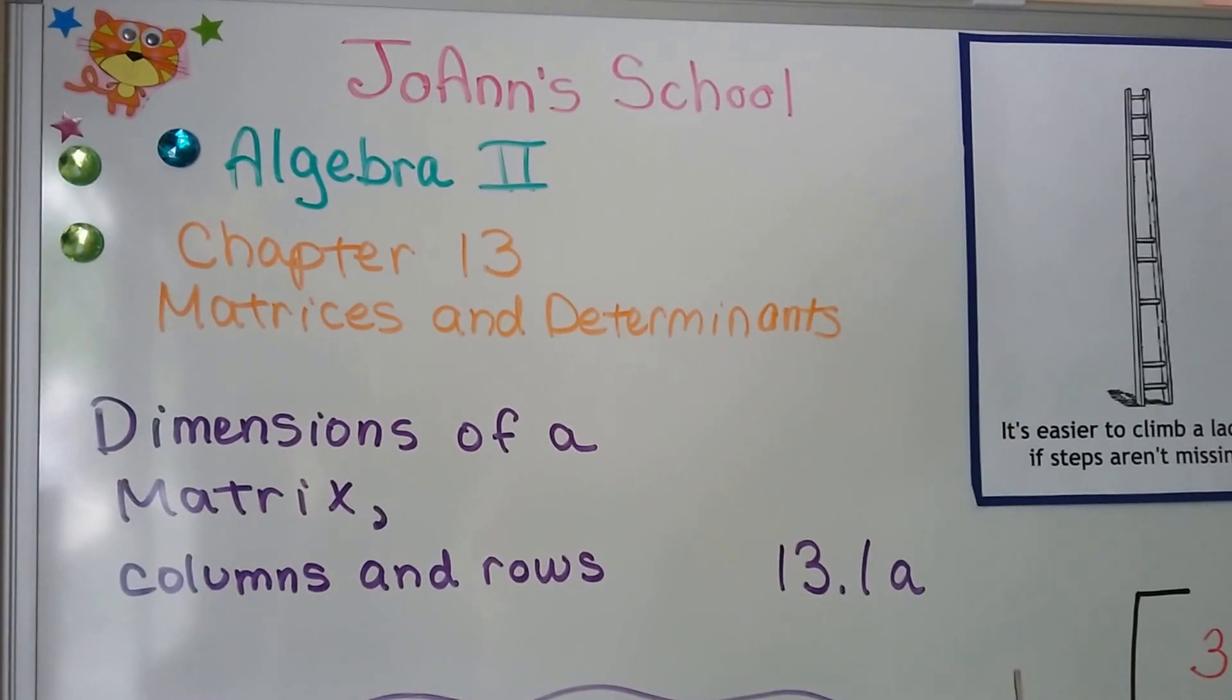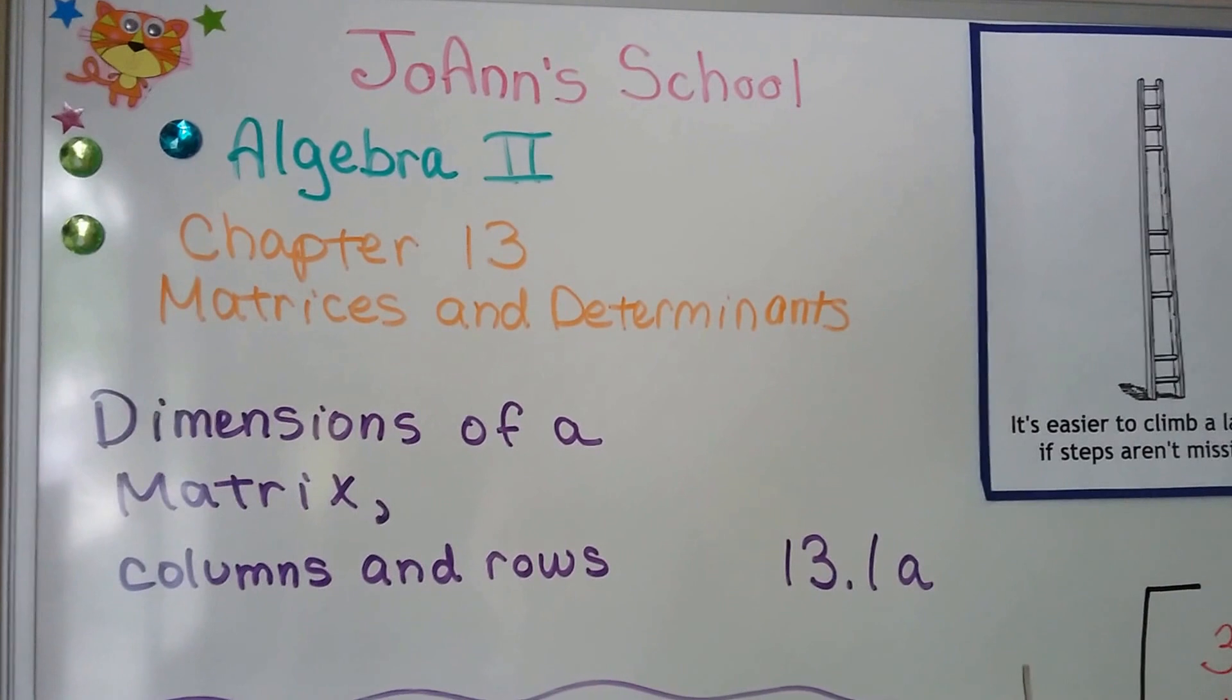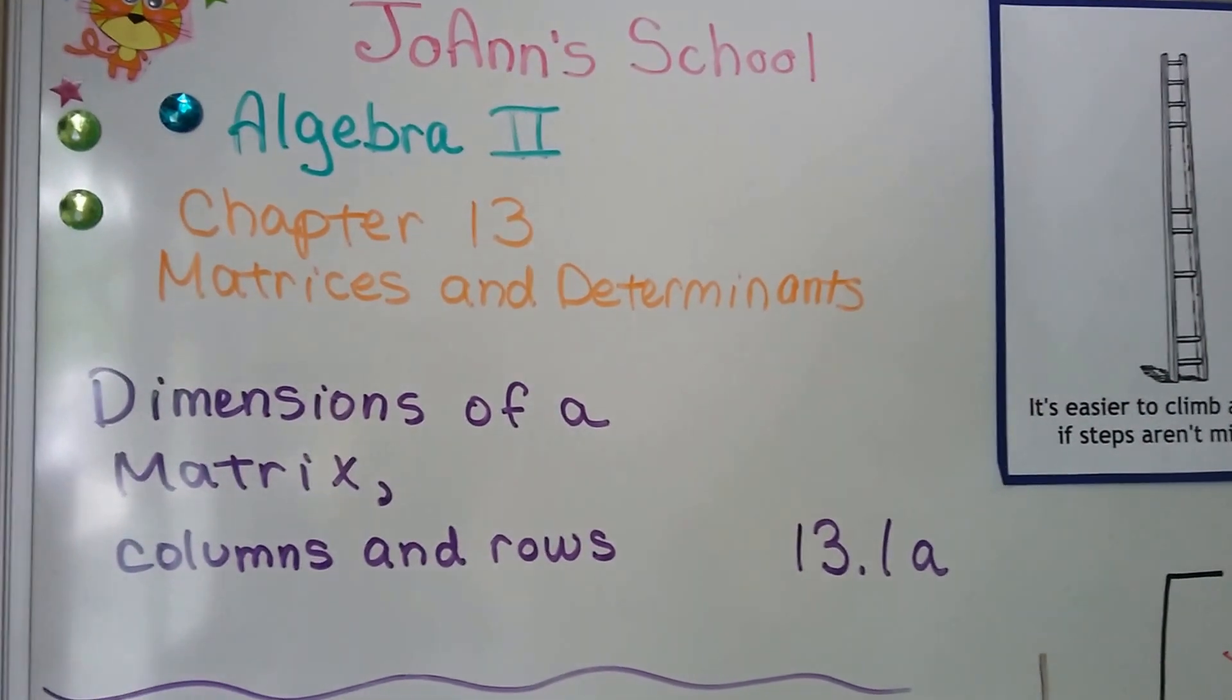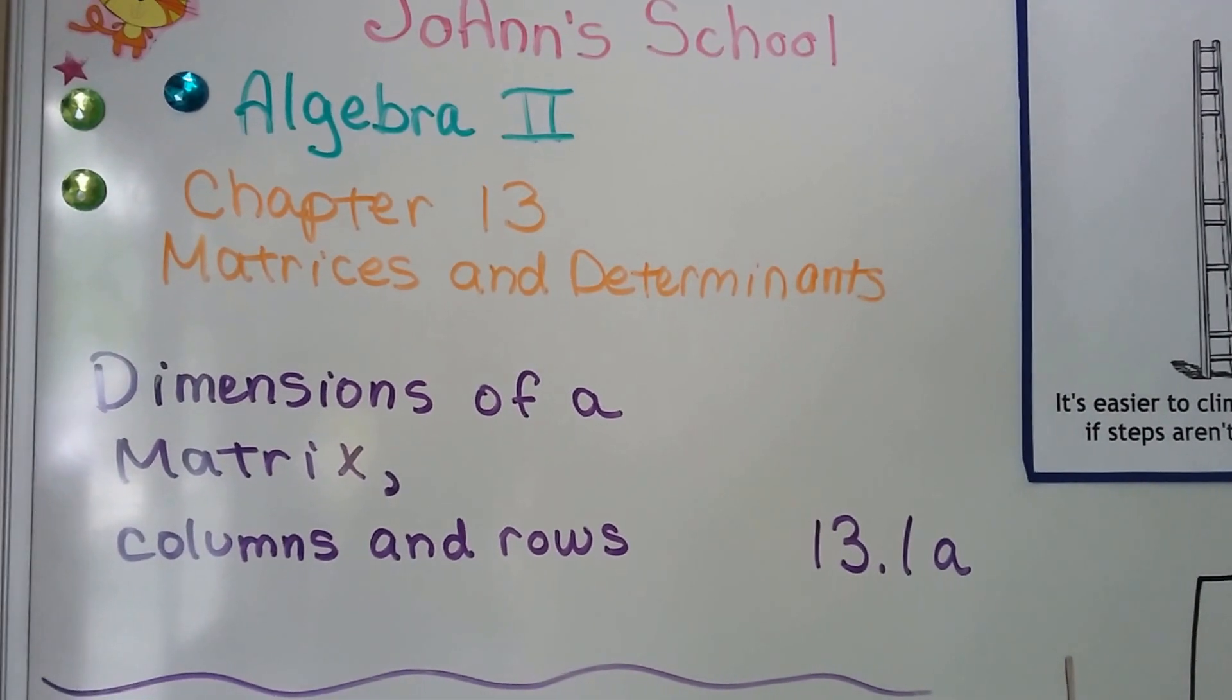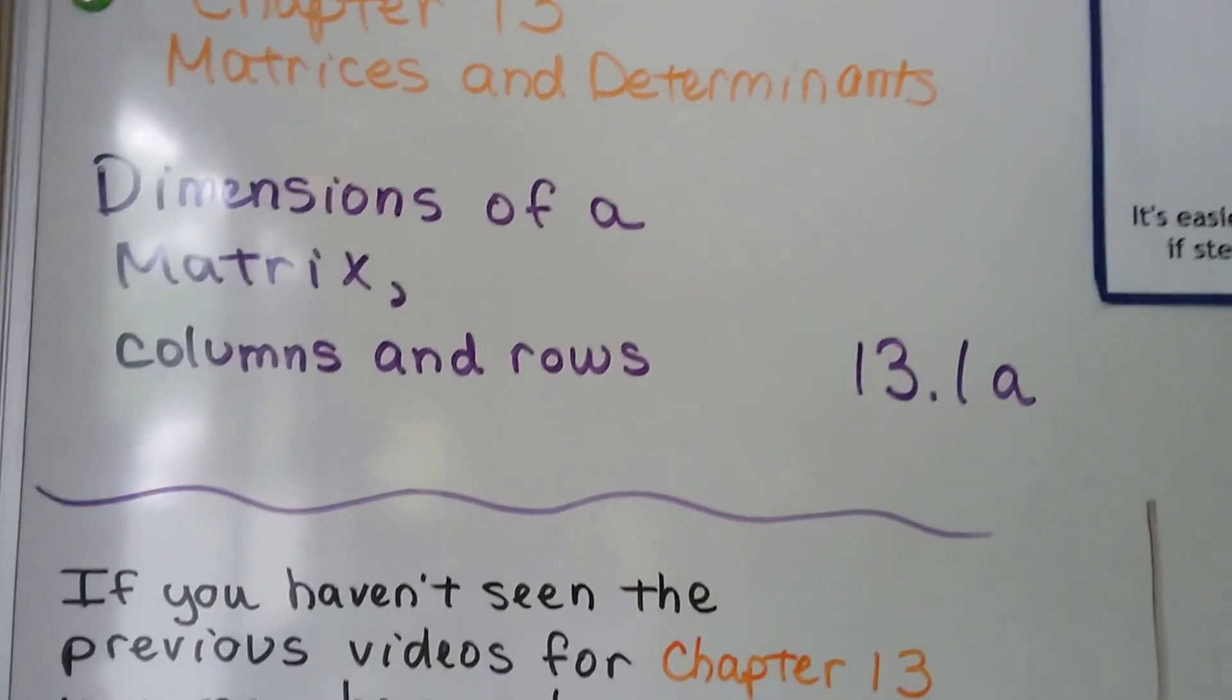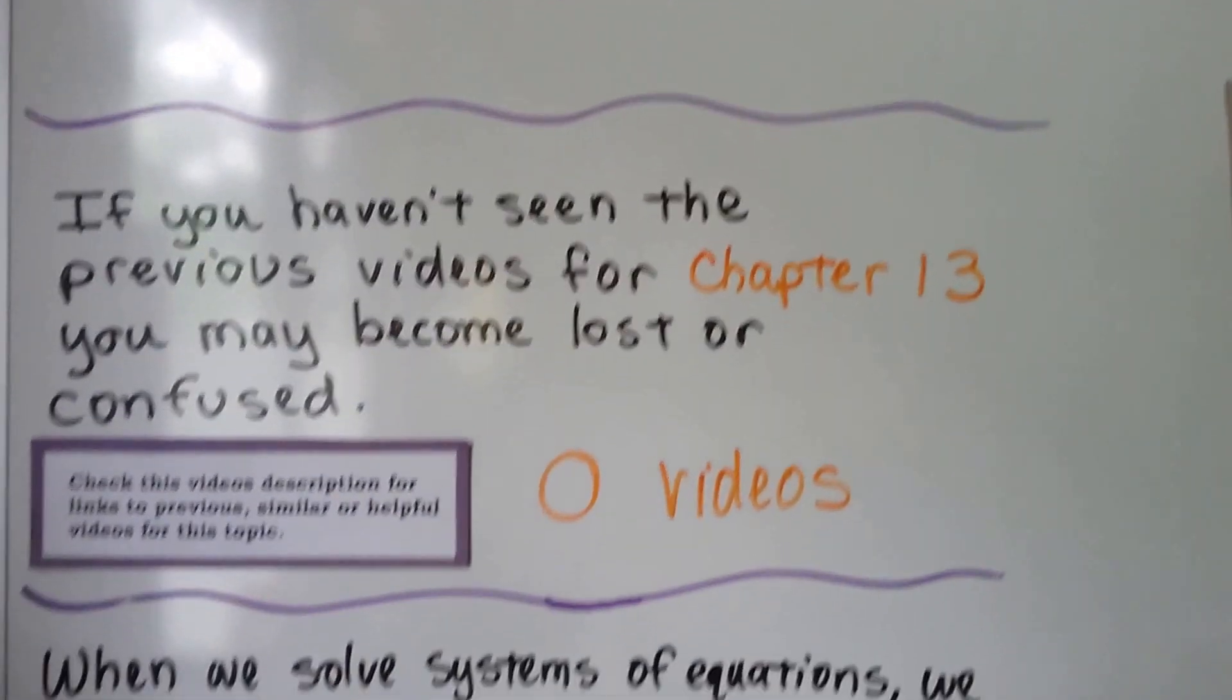We're finally in chapter 13. We're going to talk about matrices and determinants in this entire chapter. This is dimensions of a matrix, its columns and rows, and this is 13.1a. We have no previous videos for chapter 13.